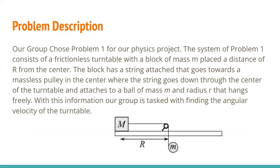For our problem description, we chose Problem 1. The system consists of a frictionless turntable with a block of mass M placed at distance big R from the center. The block has a string attached that goes towards a massless pulley in the center, where the string goes down through the center of the turntable and attaches to a ball of mass little m and radius r that hangs freely. With this information, our group is tasked with finding the angular velocity of the turntable.